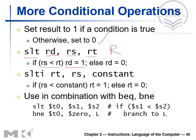When RS becomes greater than or equal to RT, RD becomes zero. We can also have an I-type version: SLTI, set on less than immediate, which compares the RS register value with a constant. If RS is less than the constant, then RT equals one; otherwise RT becomes zero. This is used to generate pseudo-instructions.